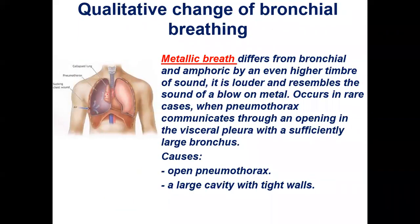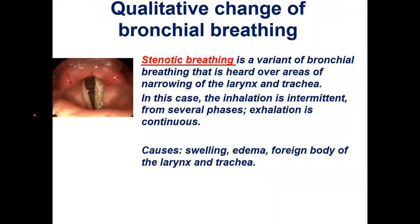Another type of bronchial breathing is metallic breathing, mainly caused by open pneumothorax that communicates with the visceral pleura. Bronchial breathing in this case includes all inspiratory and expiratory phases but with a metallic timbre. Stenotic breathing is also a variant of bronchial breathing, heard over areas of narrowing of the larynx and trachea — for example, due to swelling, edema, or a foreign body in the larynx or trachea, mostly acute in children.